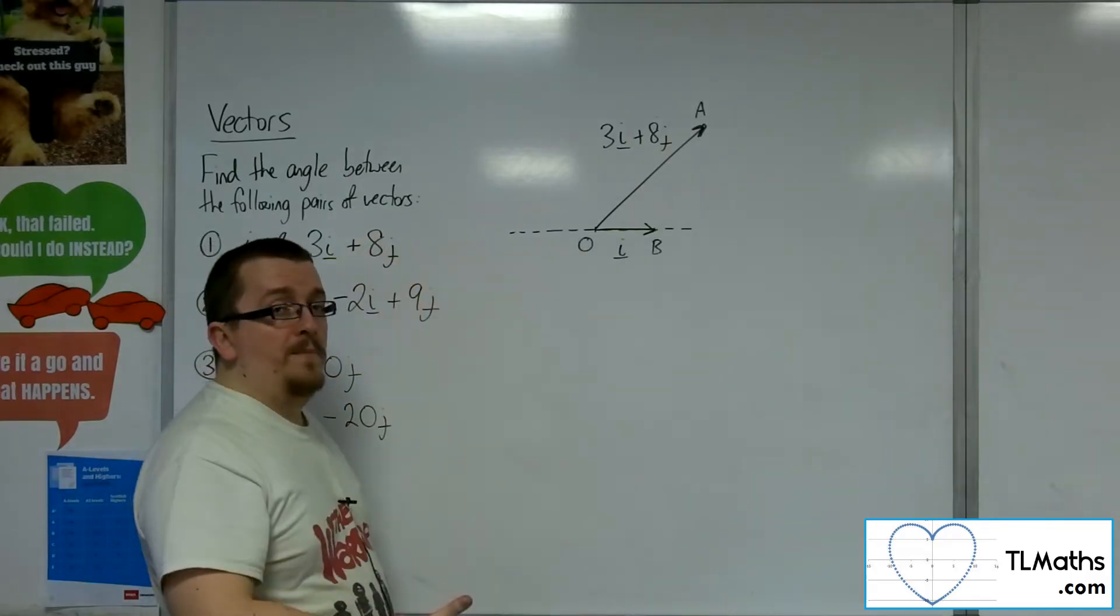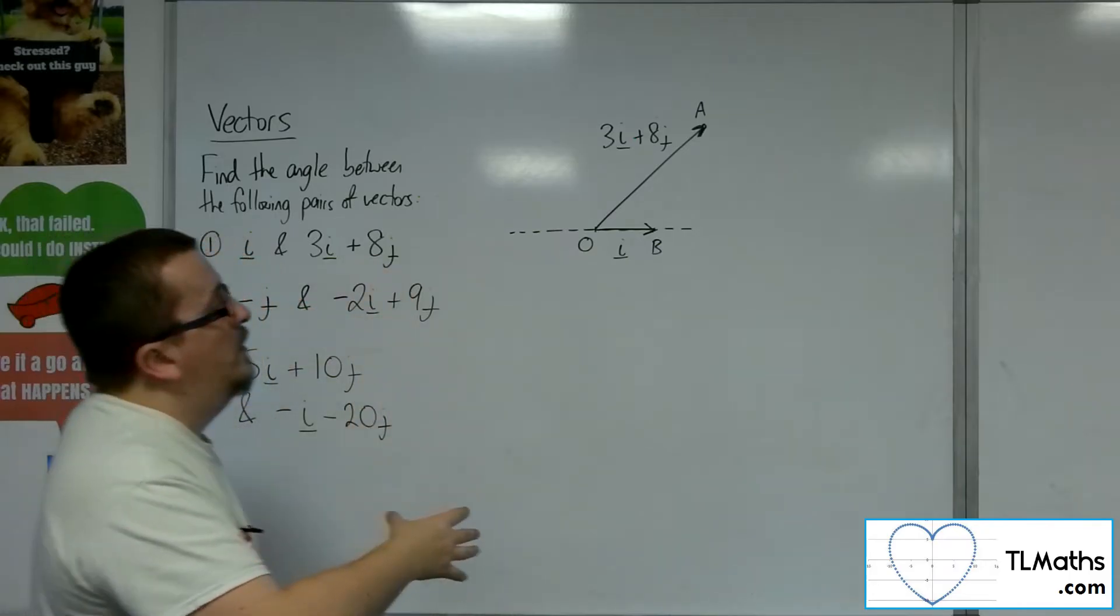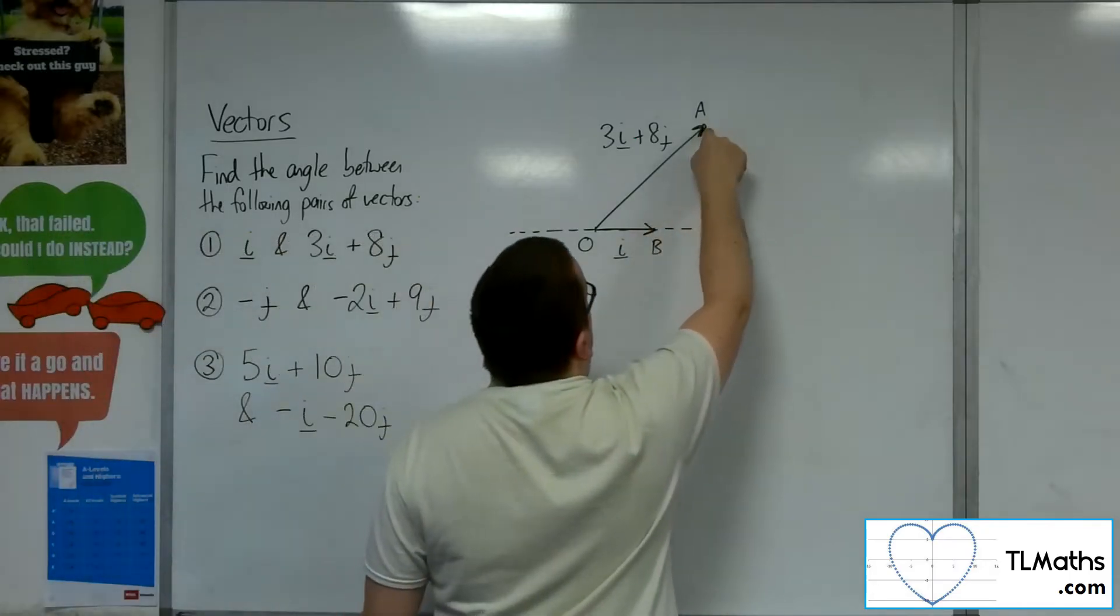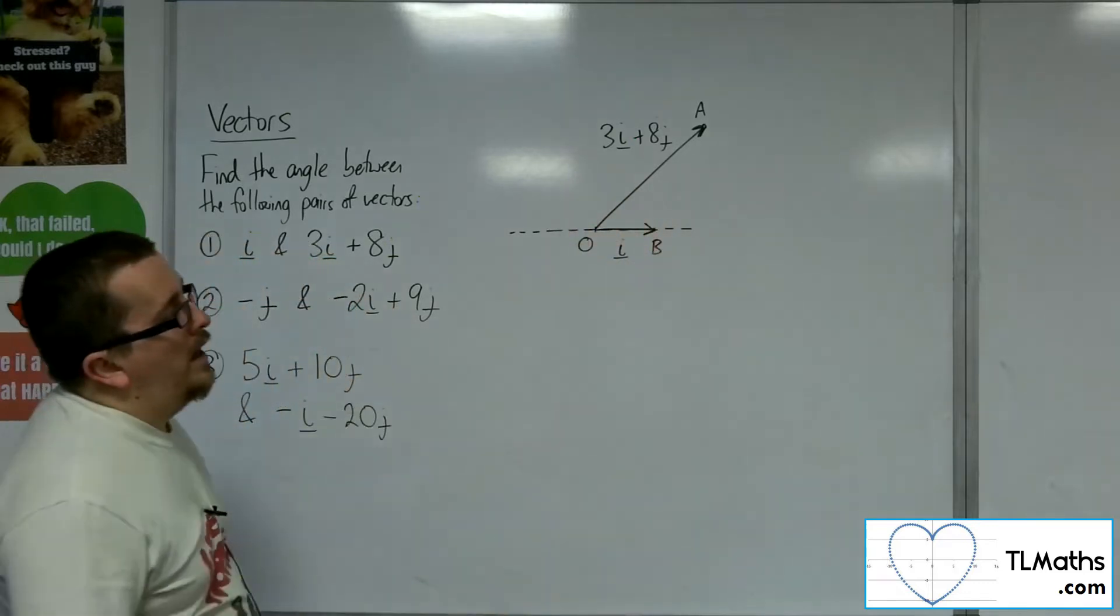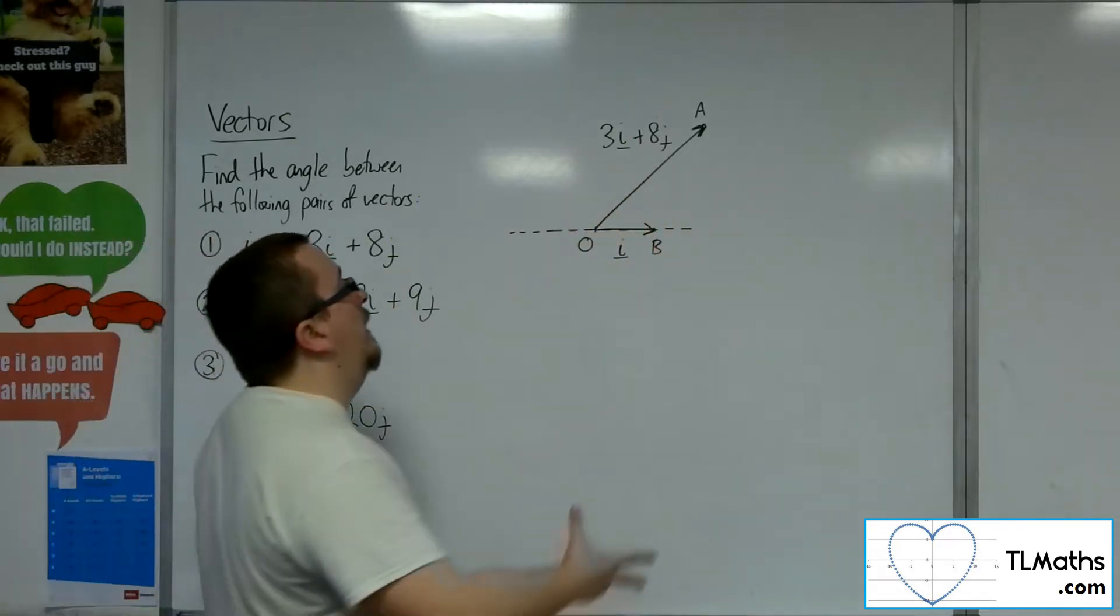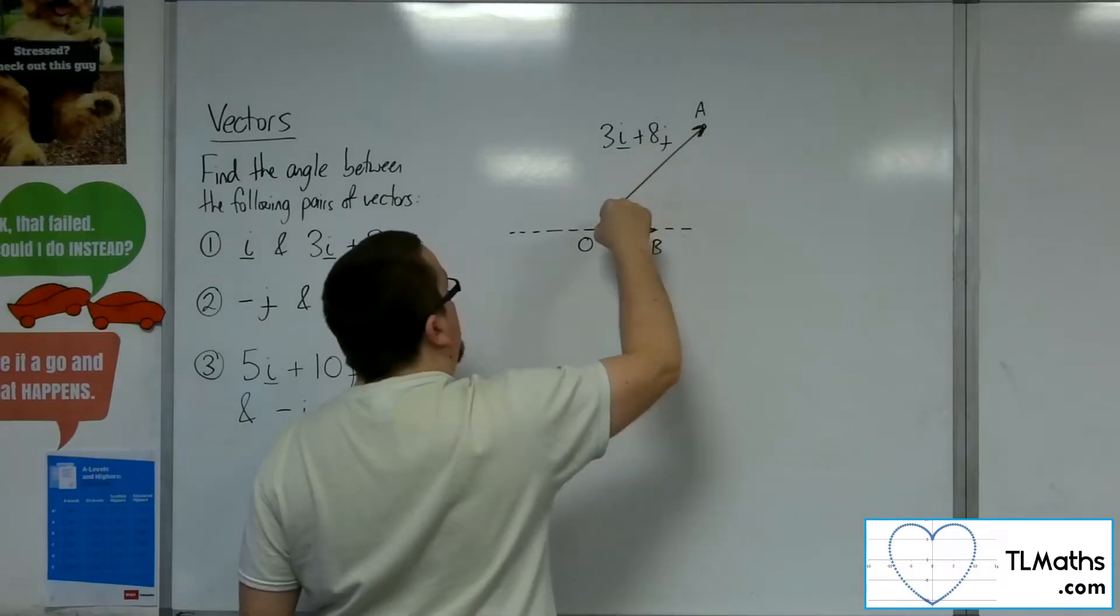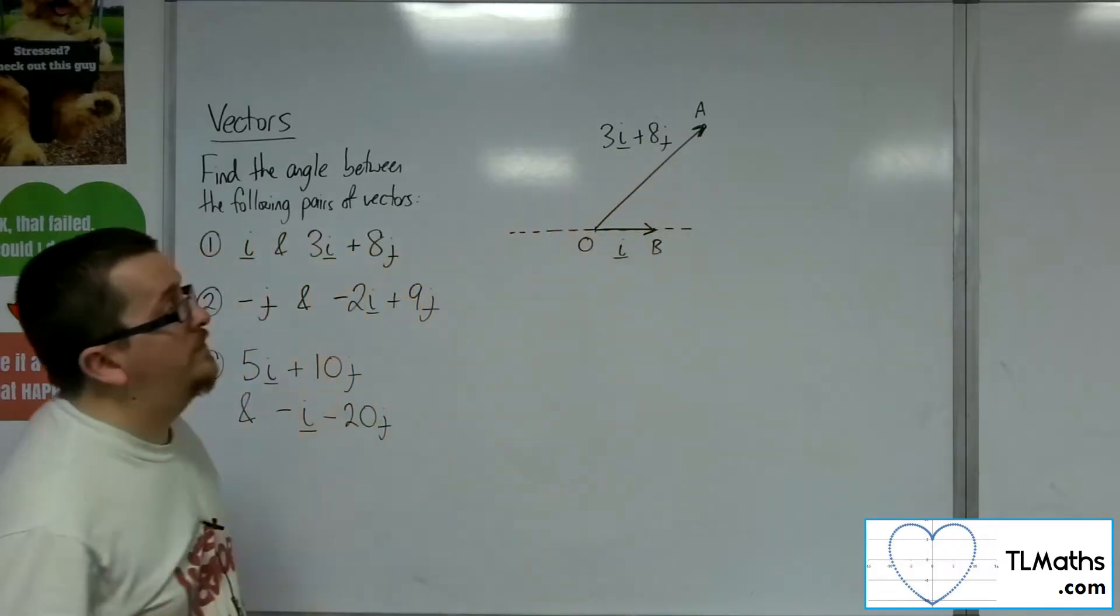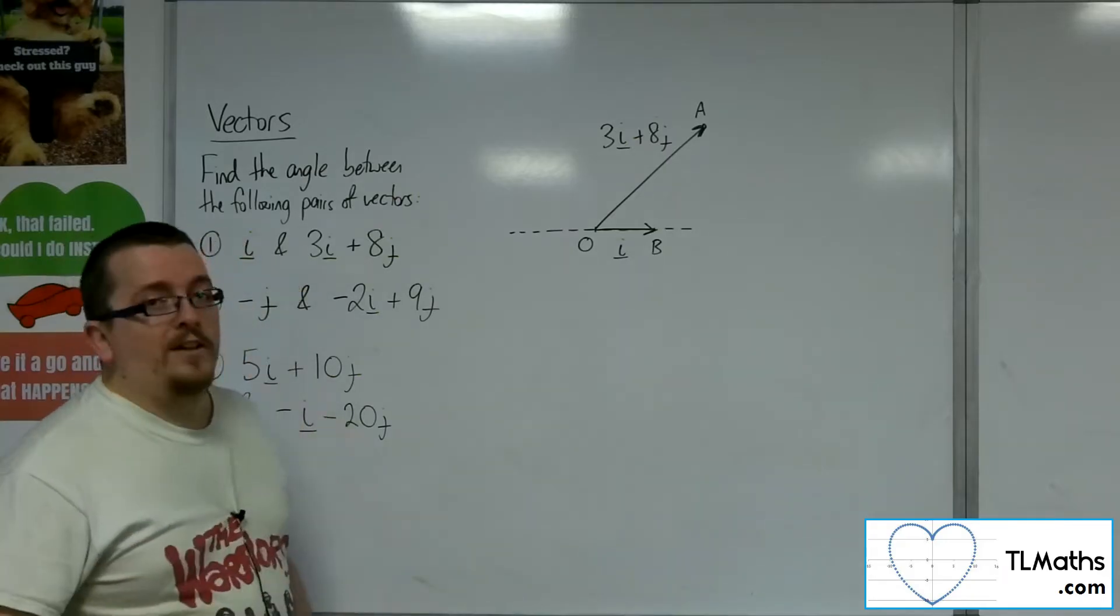Now at this point, if we followed on from the example that we looked at in the previous video, then I could work out the vector from A to B, and then I've got this scalene triangle I expect, and then I could use the cosine rule to find the length of the three sides.